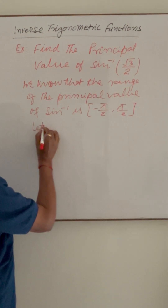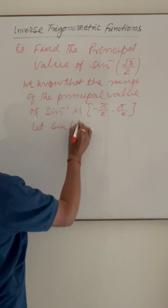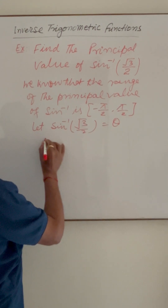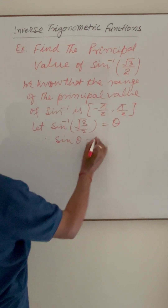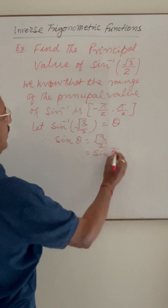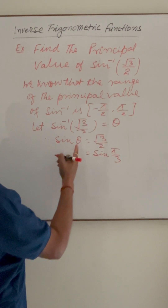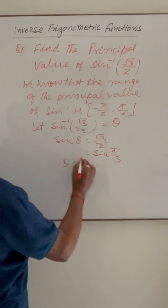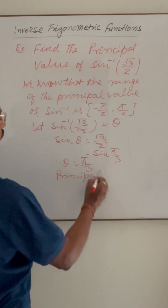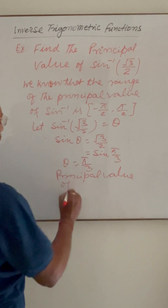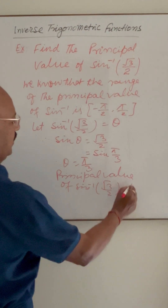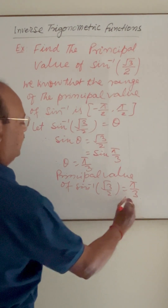Let us suppose that sine inverse of root 3 by 2 is equal to theta. Therefore, sine of theta is equal to root 3 by 2, and root 3 by 2 is sine of pi by 3. Therefore, theta is equal to pi by 3. So the principal value of sine inverse of root 3 by 2 is equal to pi by 3. This is the answer.